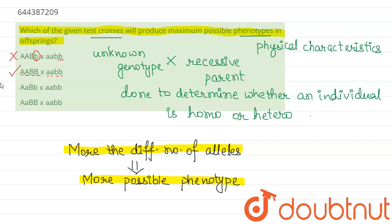And now if we see the third and the fourth, you see some of the alleles are matching in both the parents, so they will also not produce maximum phenotypes.